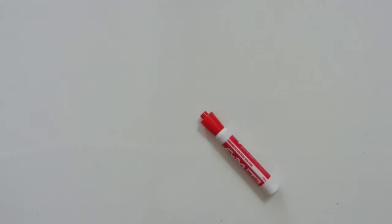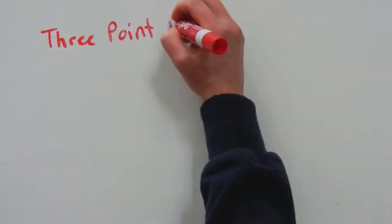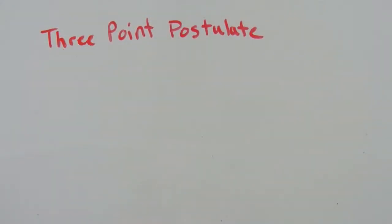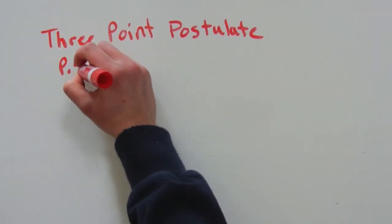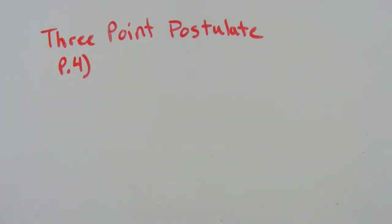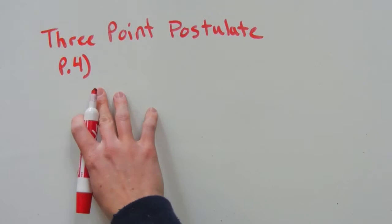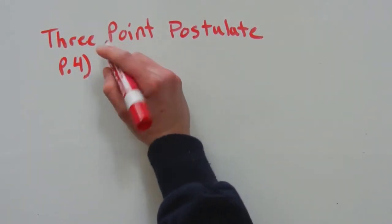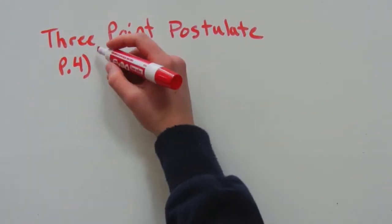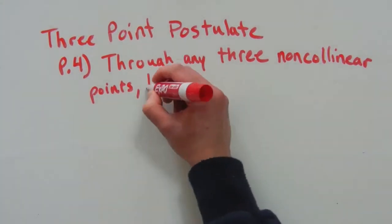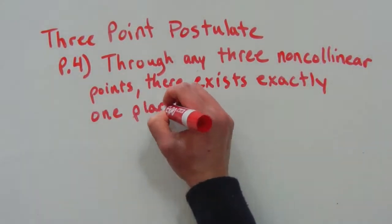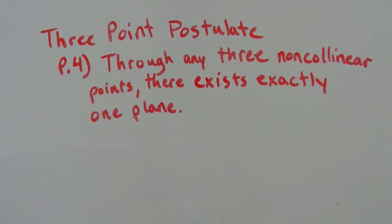In this video we are going to go over four new postulates, all dealing with a plane. Our first postulate in this video is the three-point postulate. This is P4, because we've already went over postulates one, two, and three in a previous video. Postulate 4, the three-point postulate, says that through any three non-collinear points there exists exactly one plane.